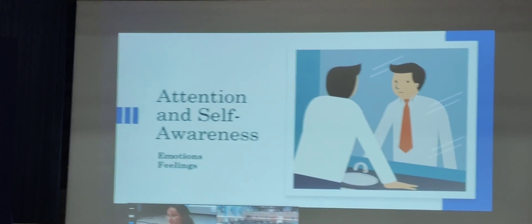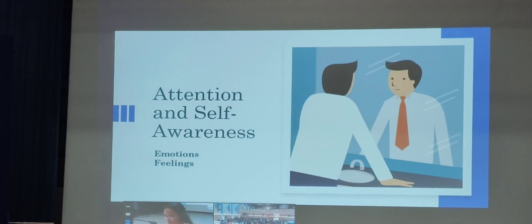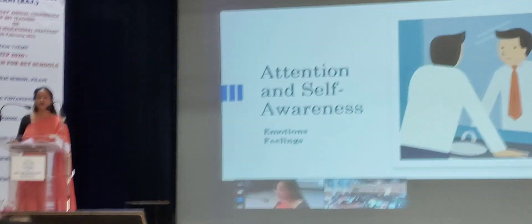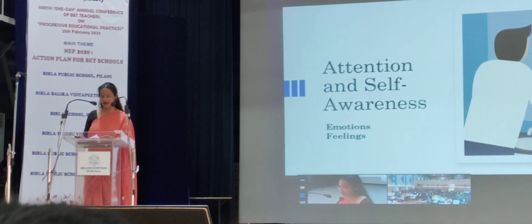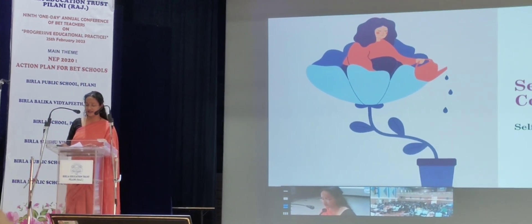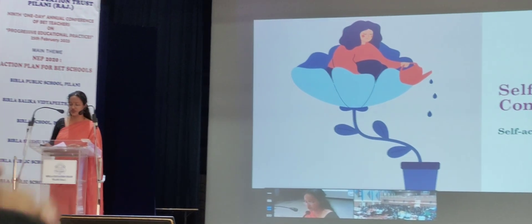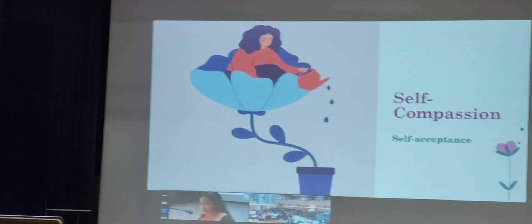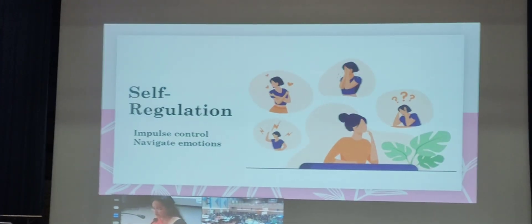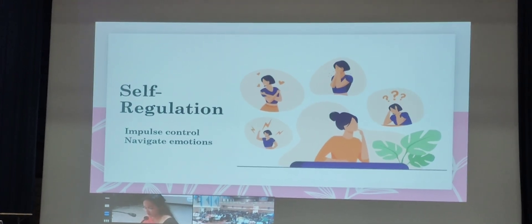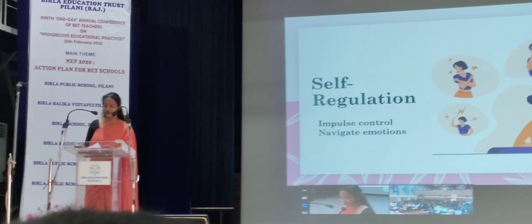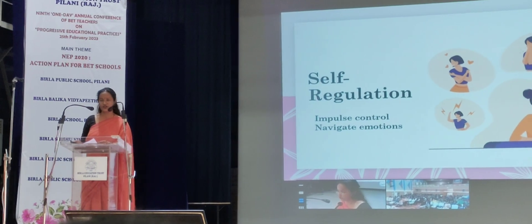Component 1: Attention and Self-awareness — attending to our body, emotions, feelings, and map of the mind. Component 2: Self-regulation — understanding emotions in context and self-acceptance. Component 3: Self-regulation of the body — balancing the body, cognitive impulse control, and navigating emotions.